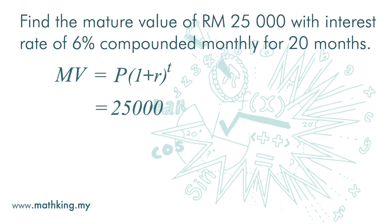Principal is 25,000. Here, we cannot just use 6% because 6% is for 1 year. This question, the interest is compounded monthly. So the interest rate here is 6% divided by 12.